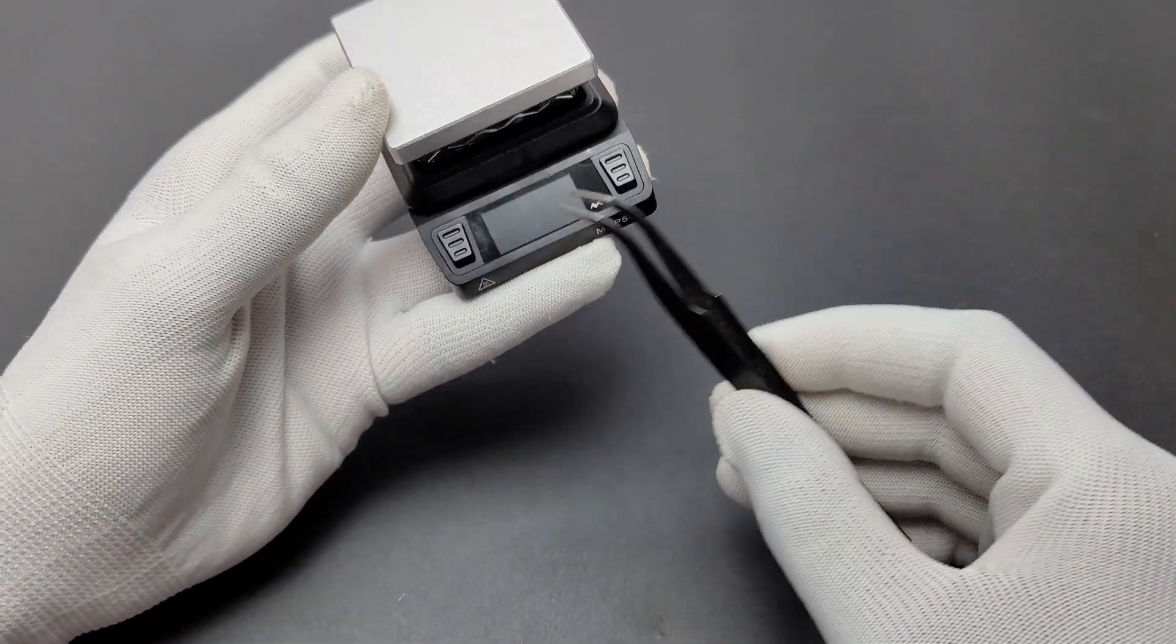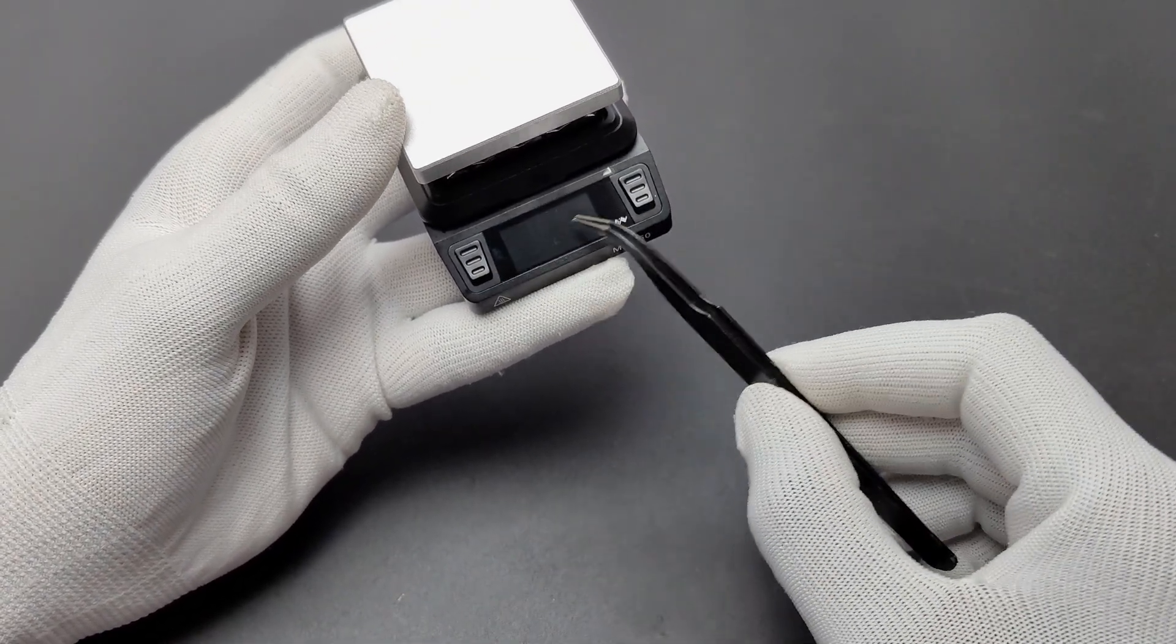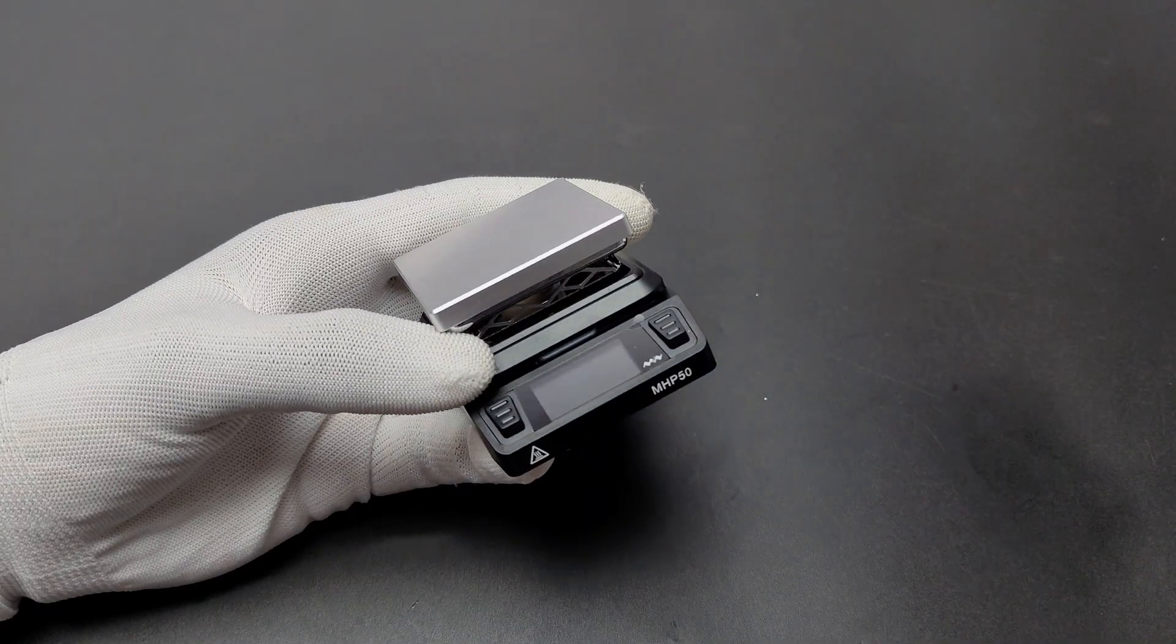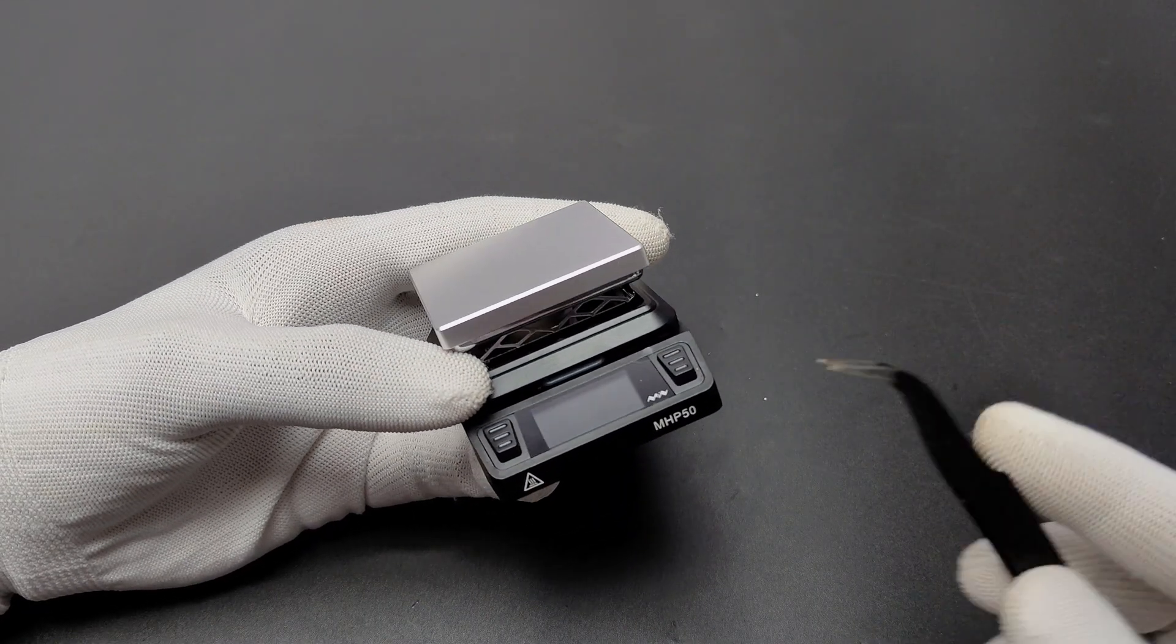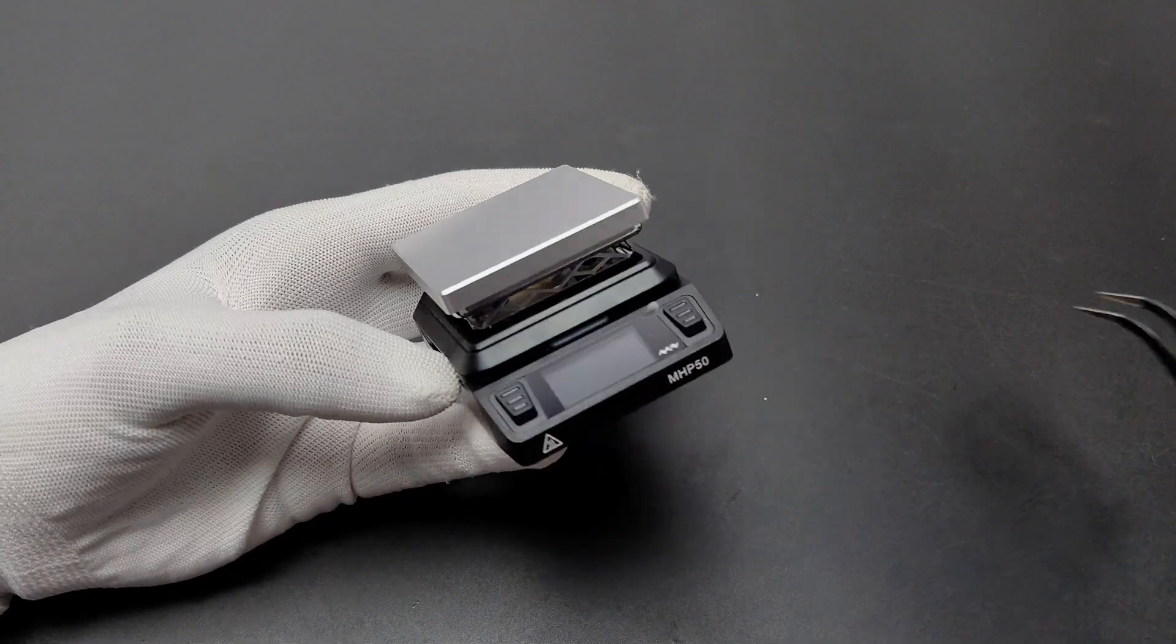It has two buttons to control the parameters of the hotplate. The MHP50 comes with a 160 by 80 pixel resolution color LCD which is clear and crisp. Above the display there is also an RGB LED for indications.